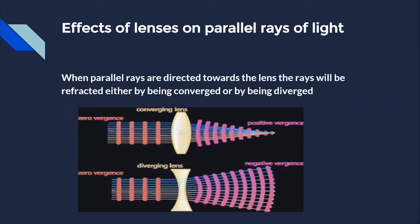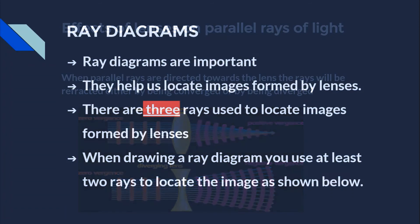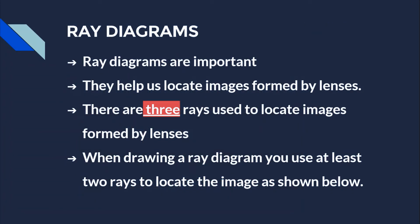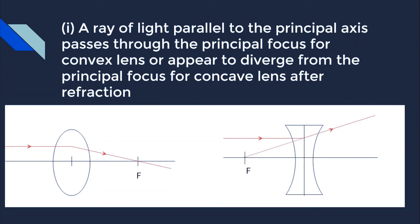When parallel rays are directed towards a lens, the rays will be refracted either by being converged or diverged. Ray diagrams are very important as they help us locate the position of an image formed by a lens. There are three rays used to locate images. When drawing a ray diagram, you use at least two rays to locate the image. The first ray is a ray parallel to the principal axis, and this ray is refracted through the principal focus — or appears to diverge from the principal focus for the concave lens — after refraction.